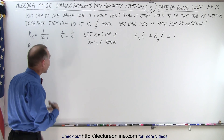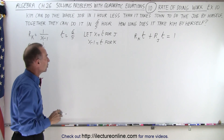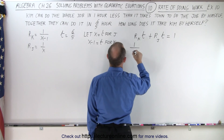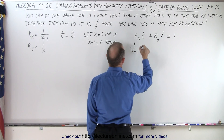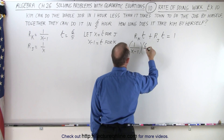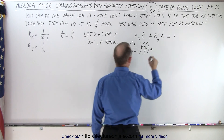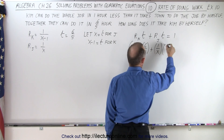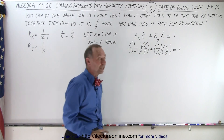The inverse gives us the rate, and now we can plug that into the equation. The rate for Kim is one over x minus one, and the time they work together is six-fifths of an hour, plus the rate of John, one over x, times the time they work together, six over five, and that equals the whole job done.